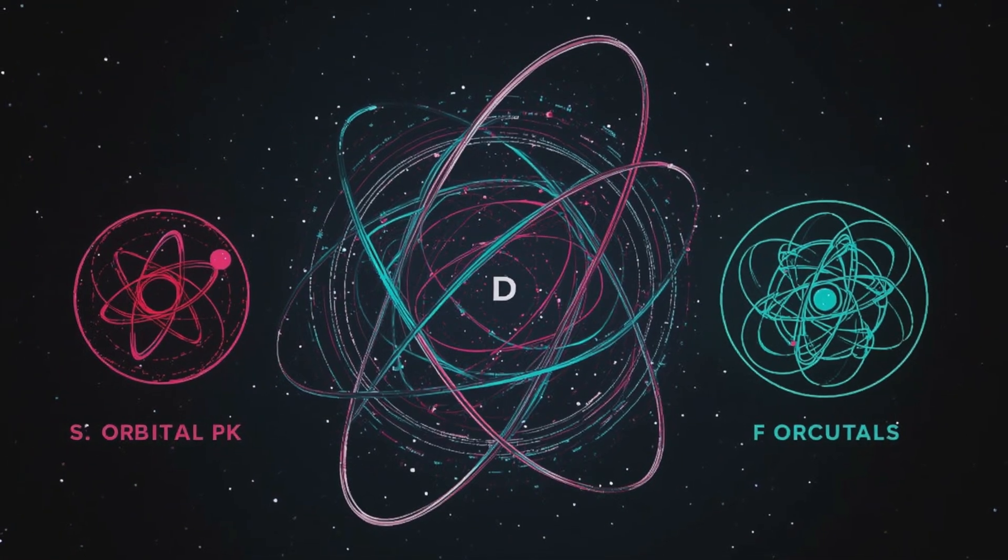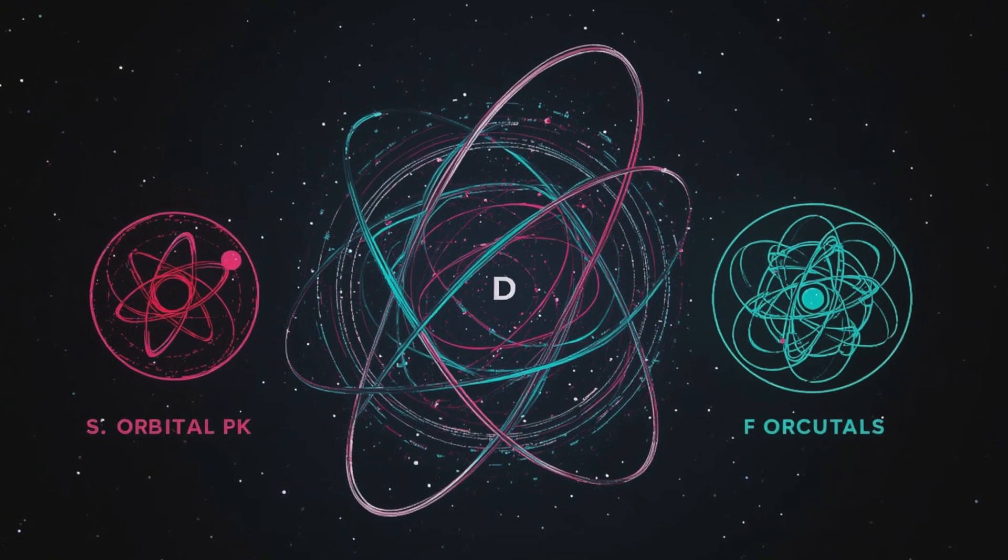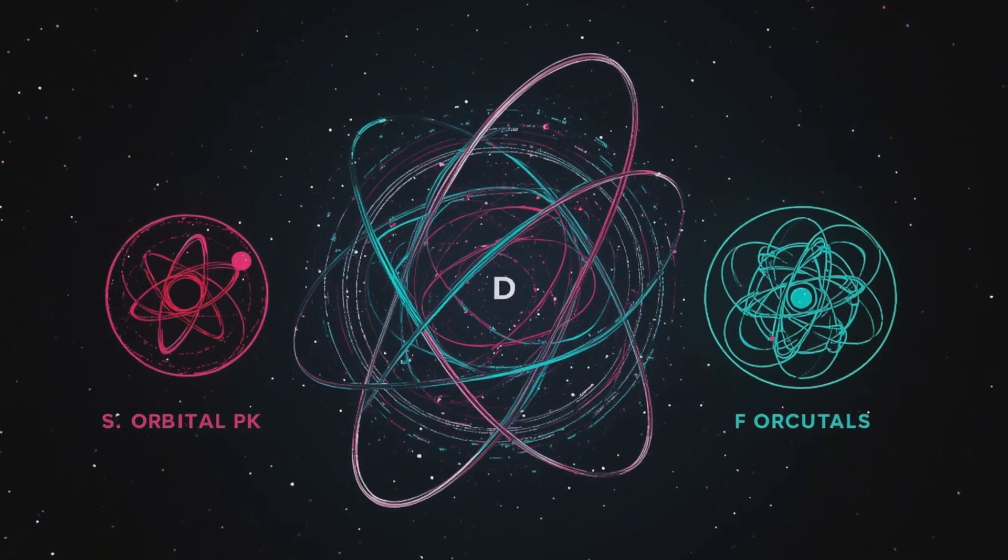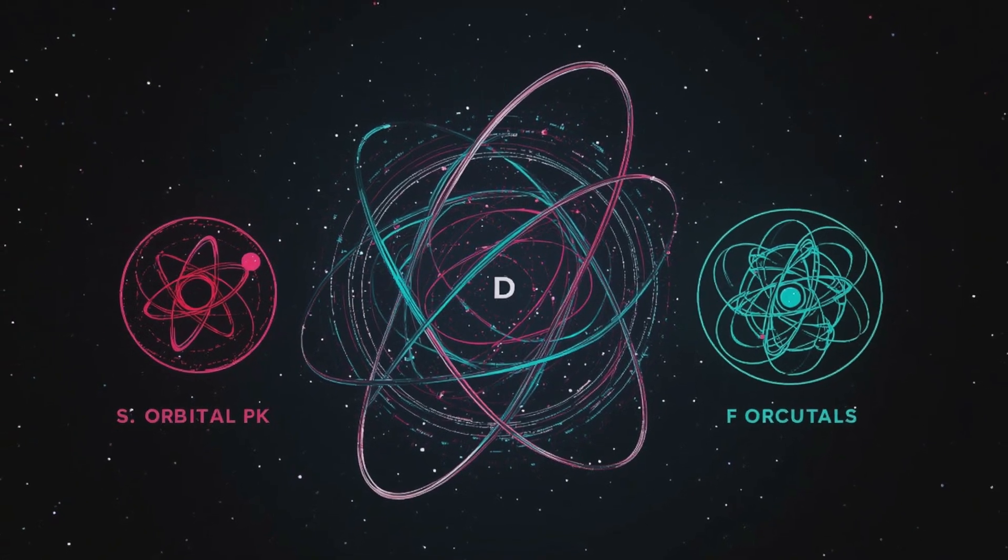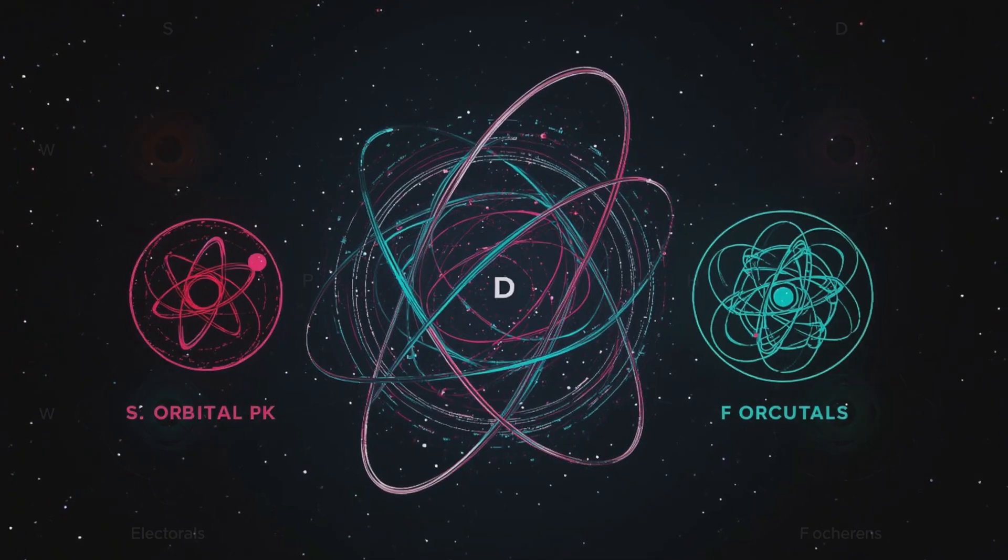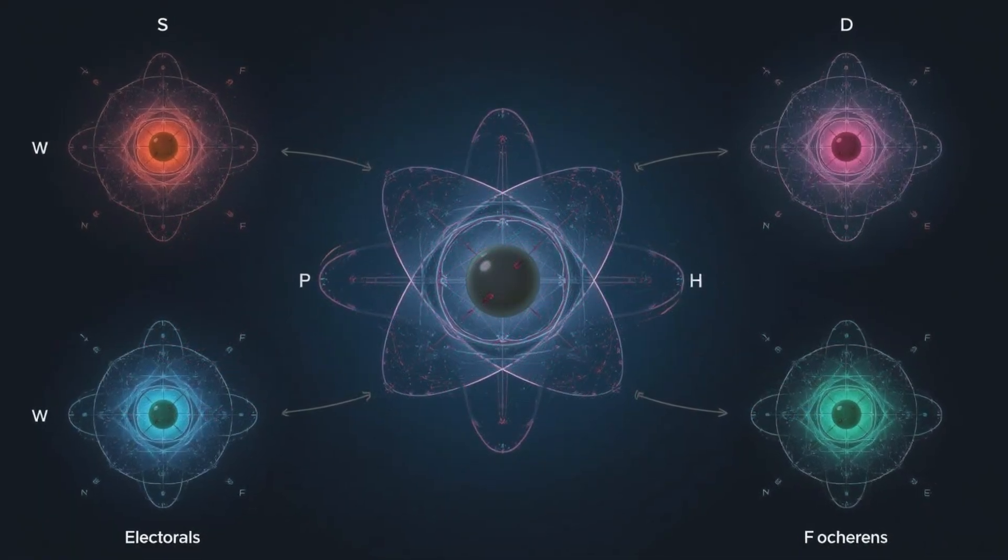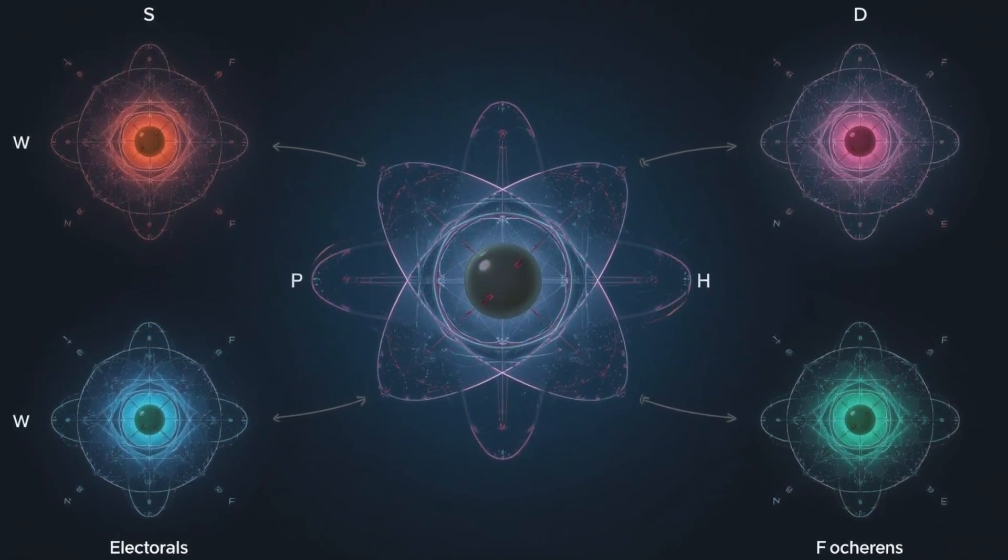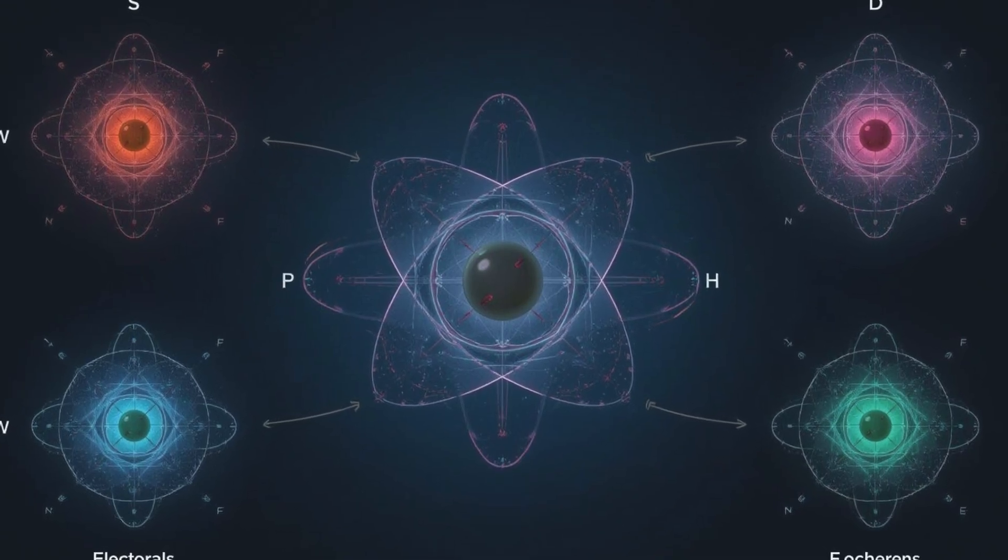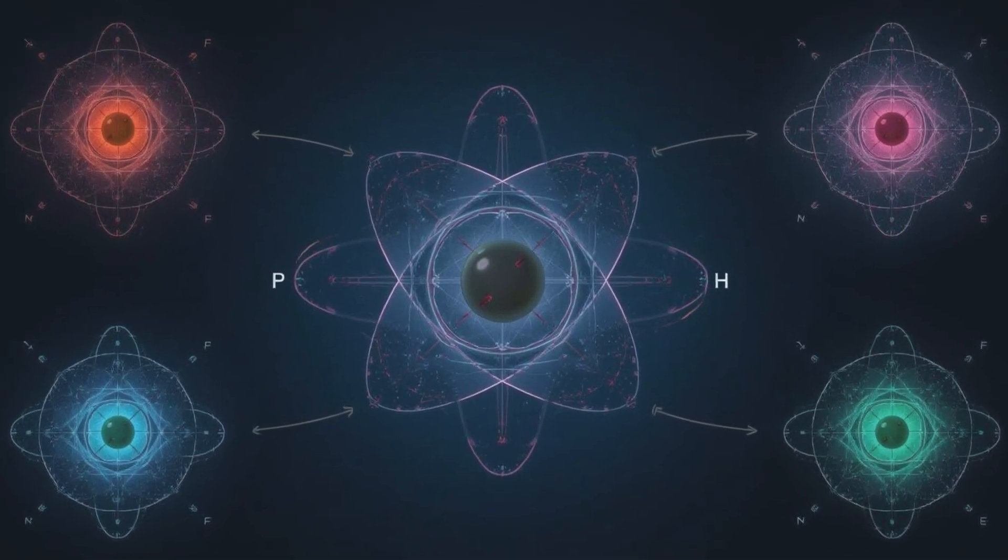Forget the classical orbits of Bohr's model. Quantum mechanics reveals a richer structure. Orbitals, regions where electrons are most likely to be found. Each orbital, s, p, d, and f, describes a unique shape, from spheres to lobes, to intricate patterns that defy intuition.